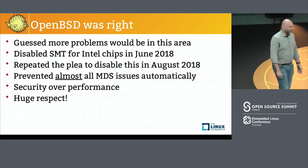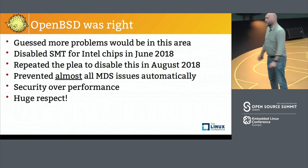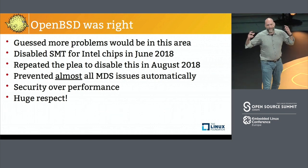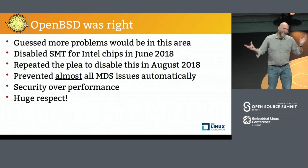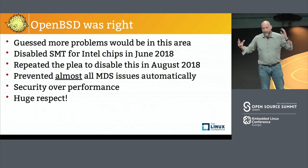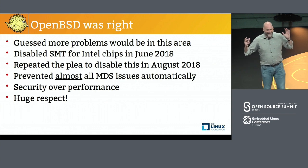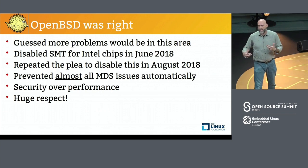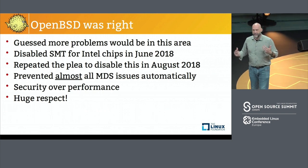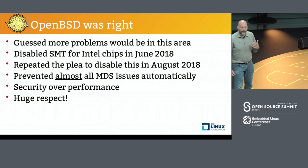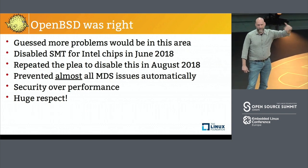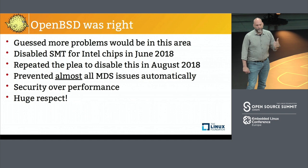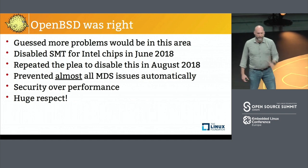I really want to call out OpenBSD. A year ago they said: disable hyper-threading, there are going to be lots of problems, we don't think we found them all. Everybody said that would slow things down, but they were right — right for the right reasons. They chose security over performance earlier than anybody else. Today all the Linux distros say disable hyper-threading. OpenBSD, by disabling hyper-threading, didn't solve all the problems, but they solved a bunch of them earlier before everybody else.